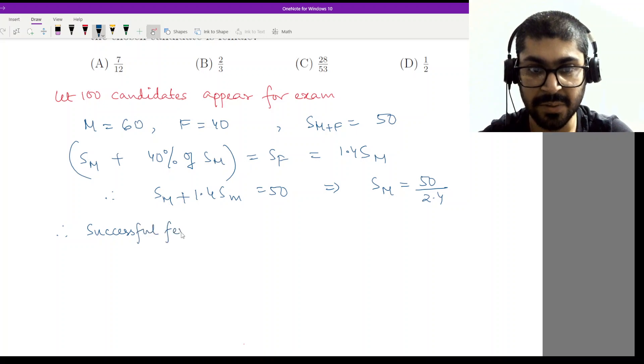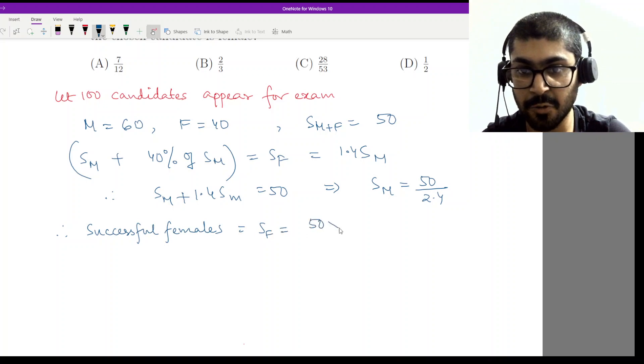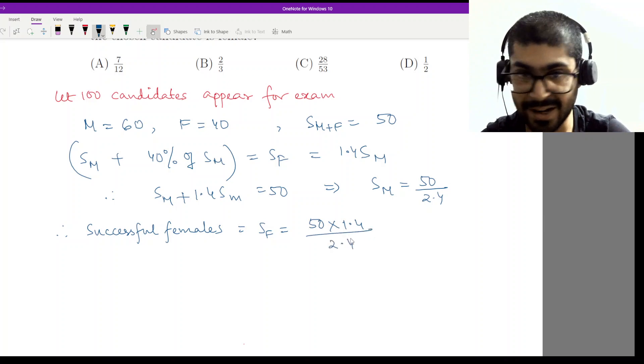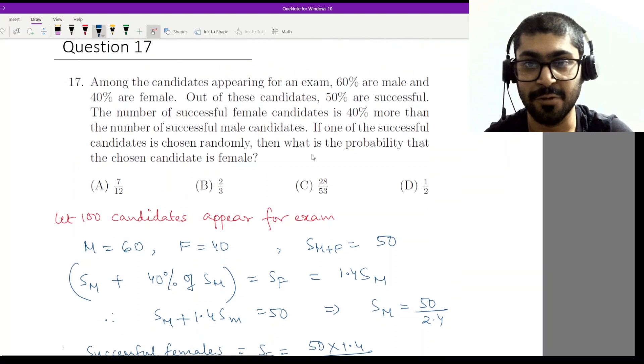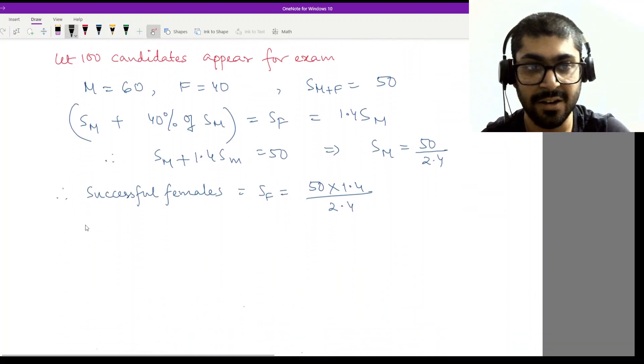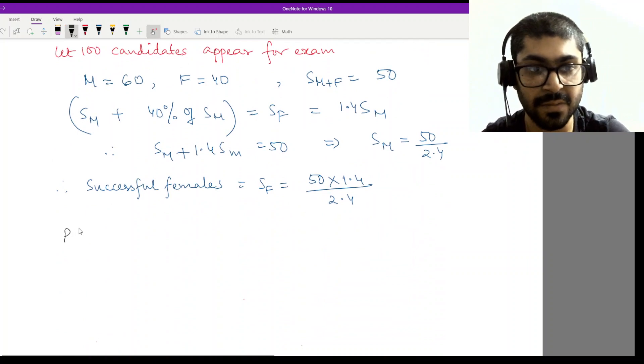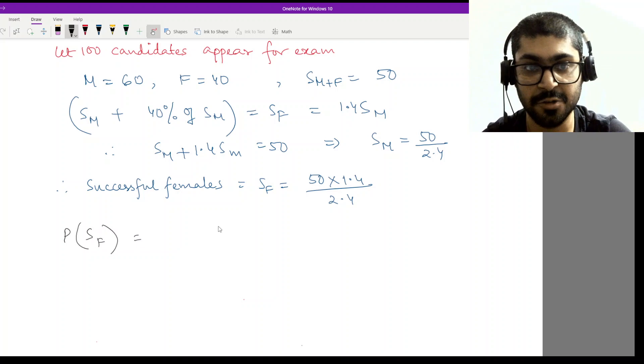So successful males is 50 by 2.4. This will be SF, that will be 1.4 into SM. So I have 50 into 1.4 by 2.4. Keep it as it is, do nothing with it. Now what is the last part? If one of the successful candidates is chosen, what is the probability it's female? Probability would be equal to P of successful female.